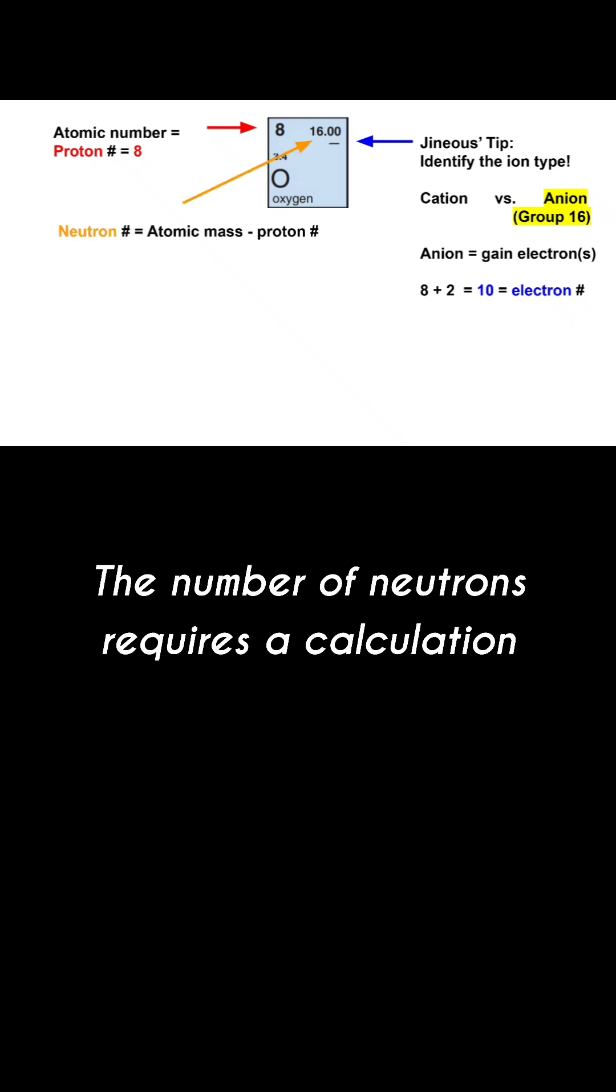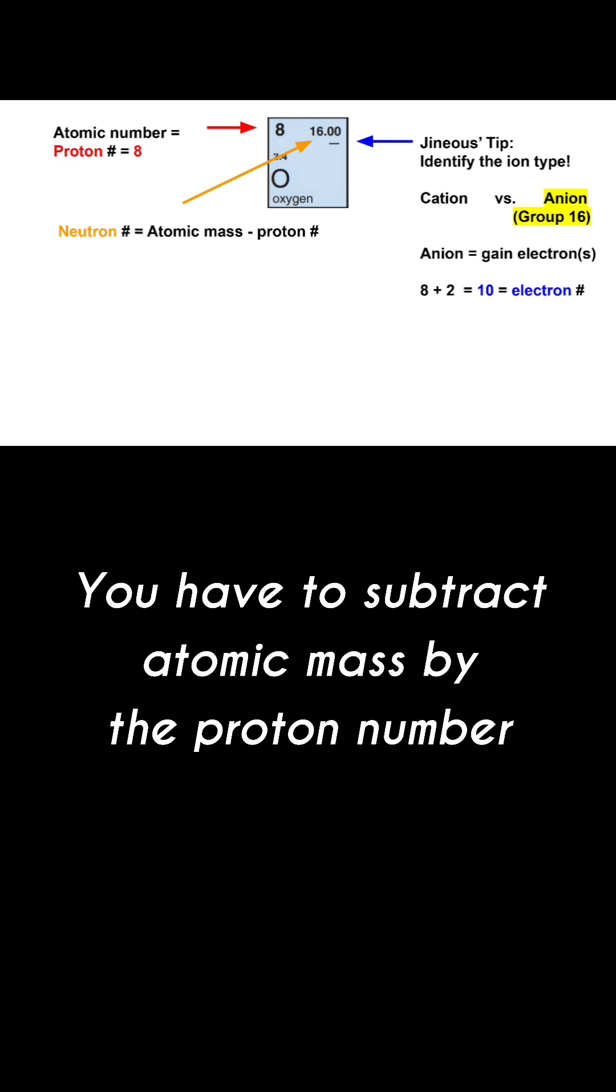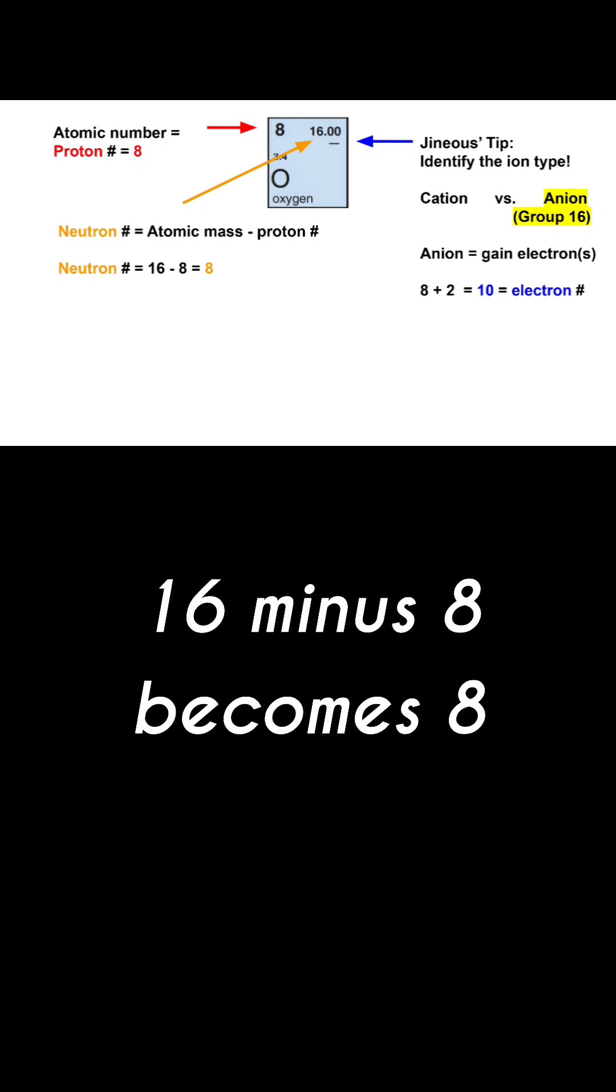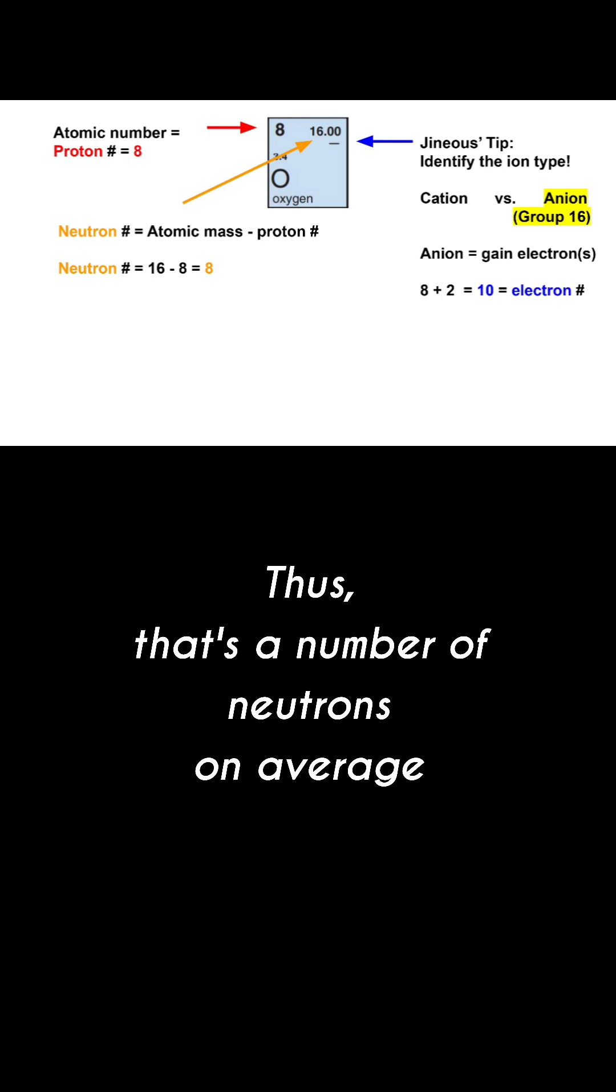The number of neutrons requires a calculation. You have to subtract atomic mass by the proton number. If you round up the atomic number to a whole number it becomes 16. 16 minus 8 becomes 8. Thus that's the number of neutrons on average.